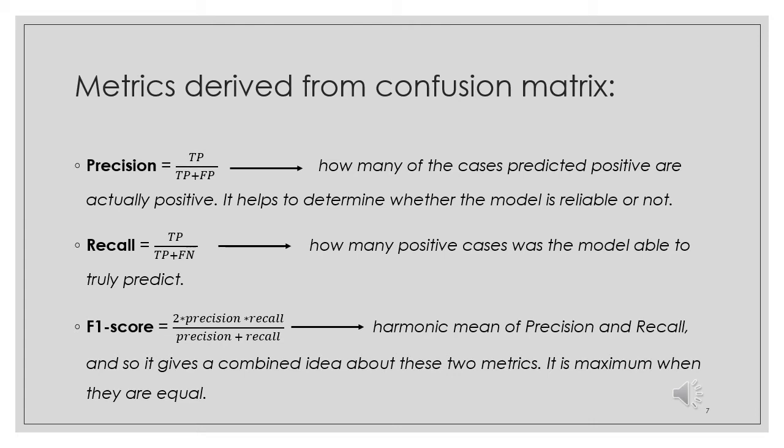The F1 score captures both trends in a single value. But there is a catch here. The interpretability of the F1 score is poor. This means that we don't know what our classifier is maximizing, precision or recall. So we use it in combination with other evaluation metrics, which gives us a complete picture of the results.